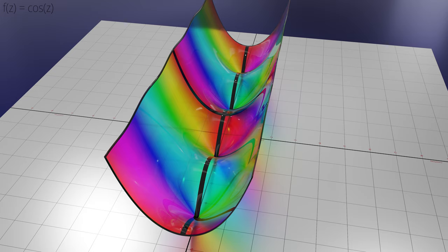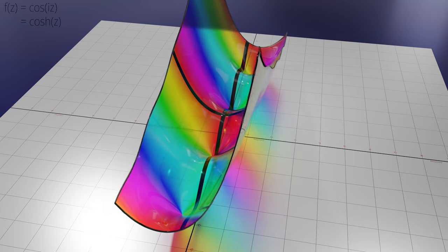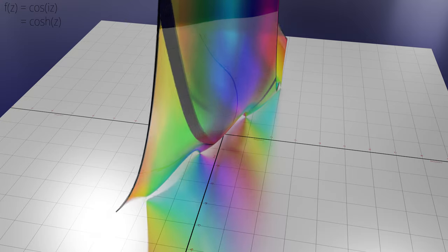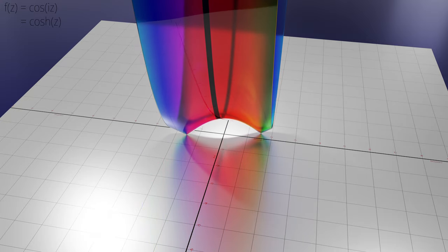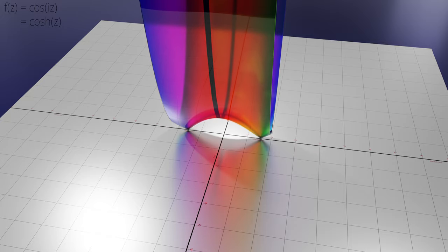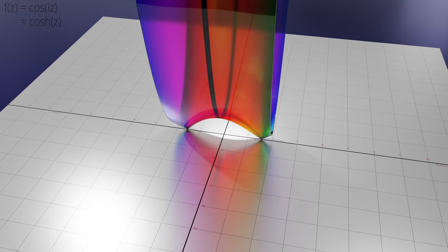Let's see if we can graph the function cosh directly. Remember that the position on the ground plane of the phase portrait is the input to the function. So we need to rotate the input of the cosine function by 90 degrees. So let's try graphing cos iz. Indeed the result is exactly the modulus surface of cosh z.